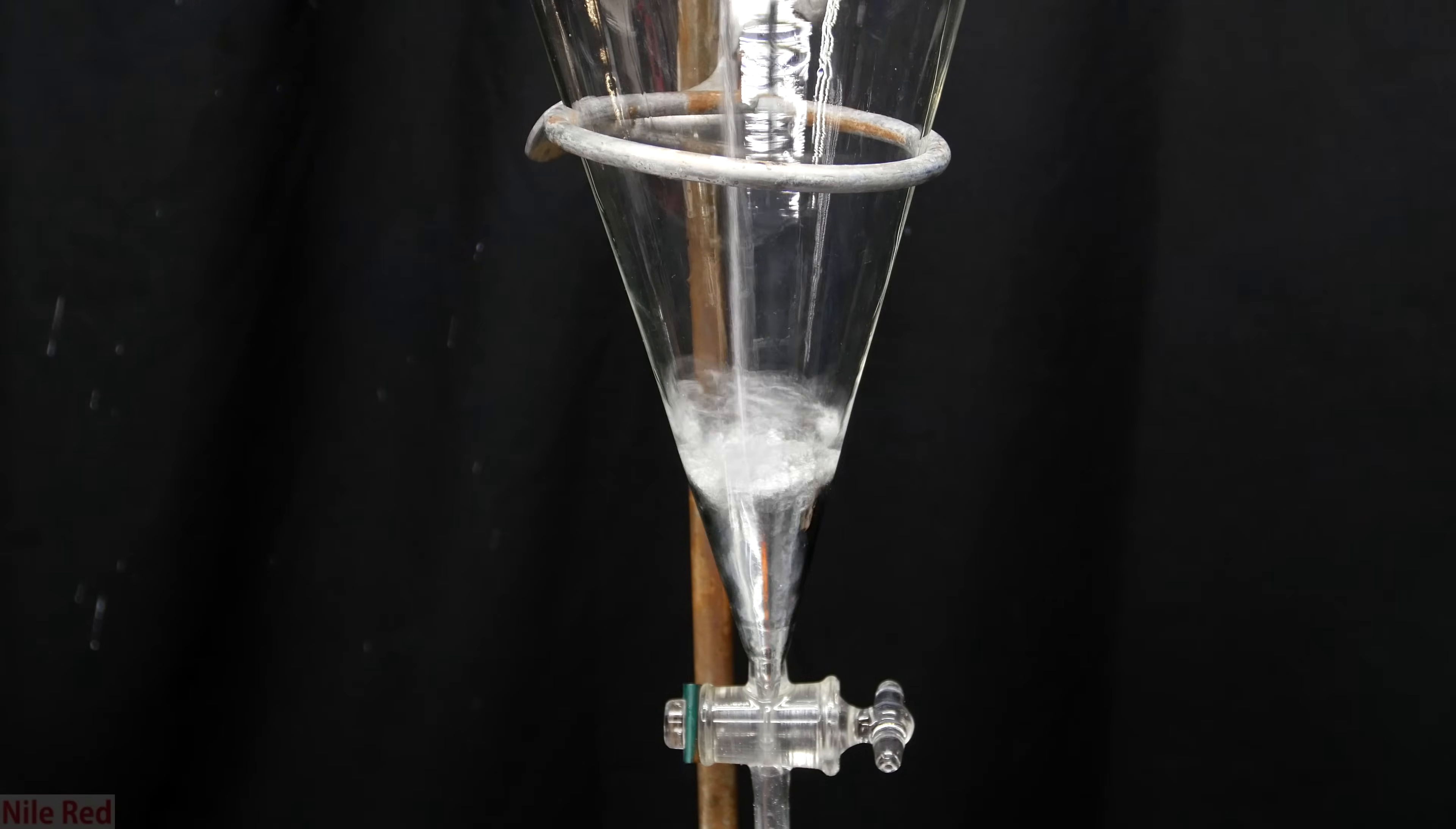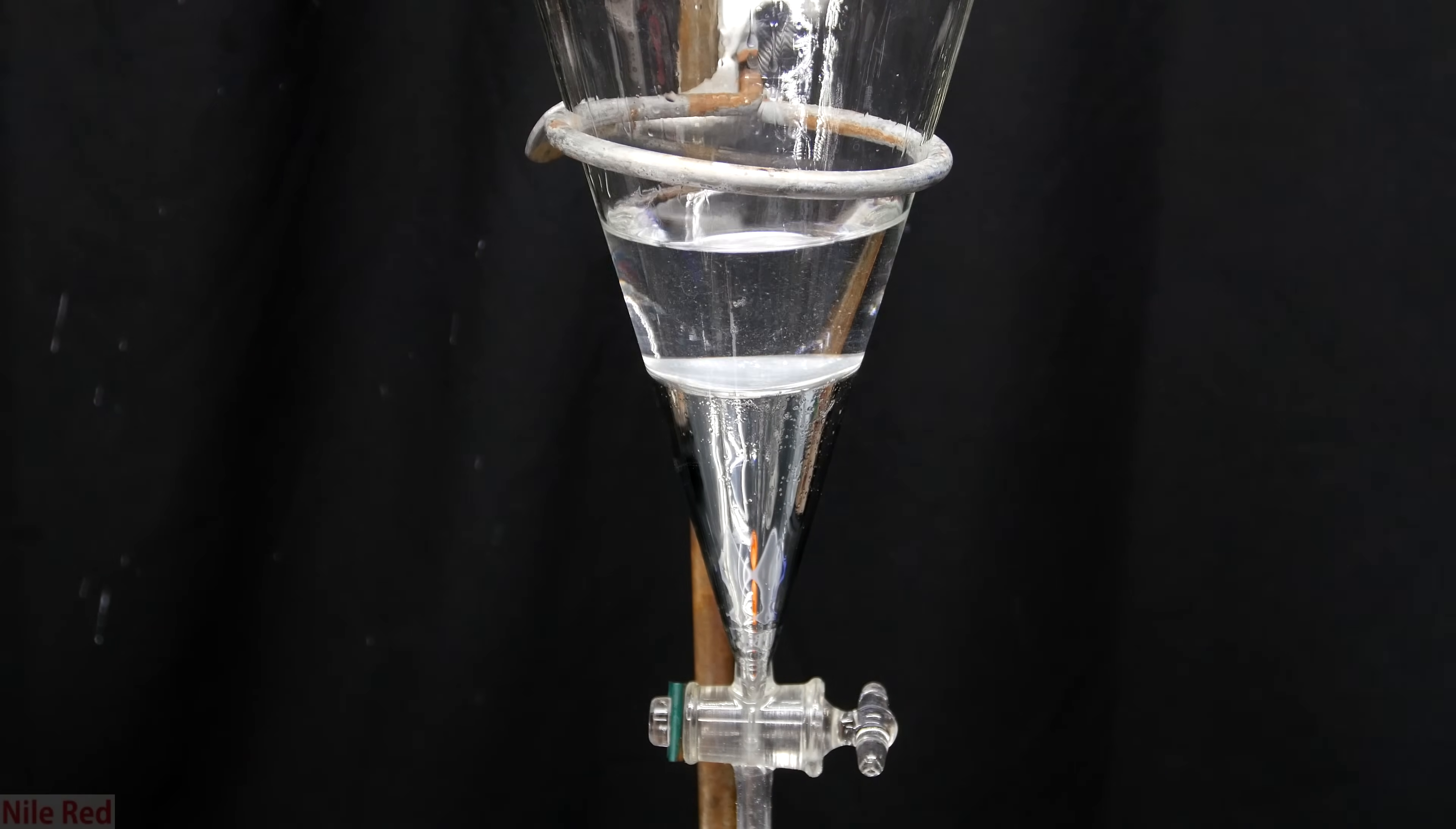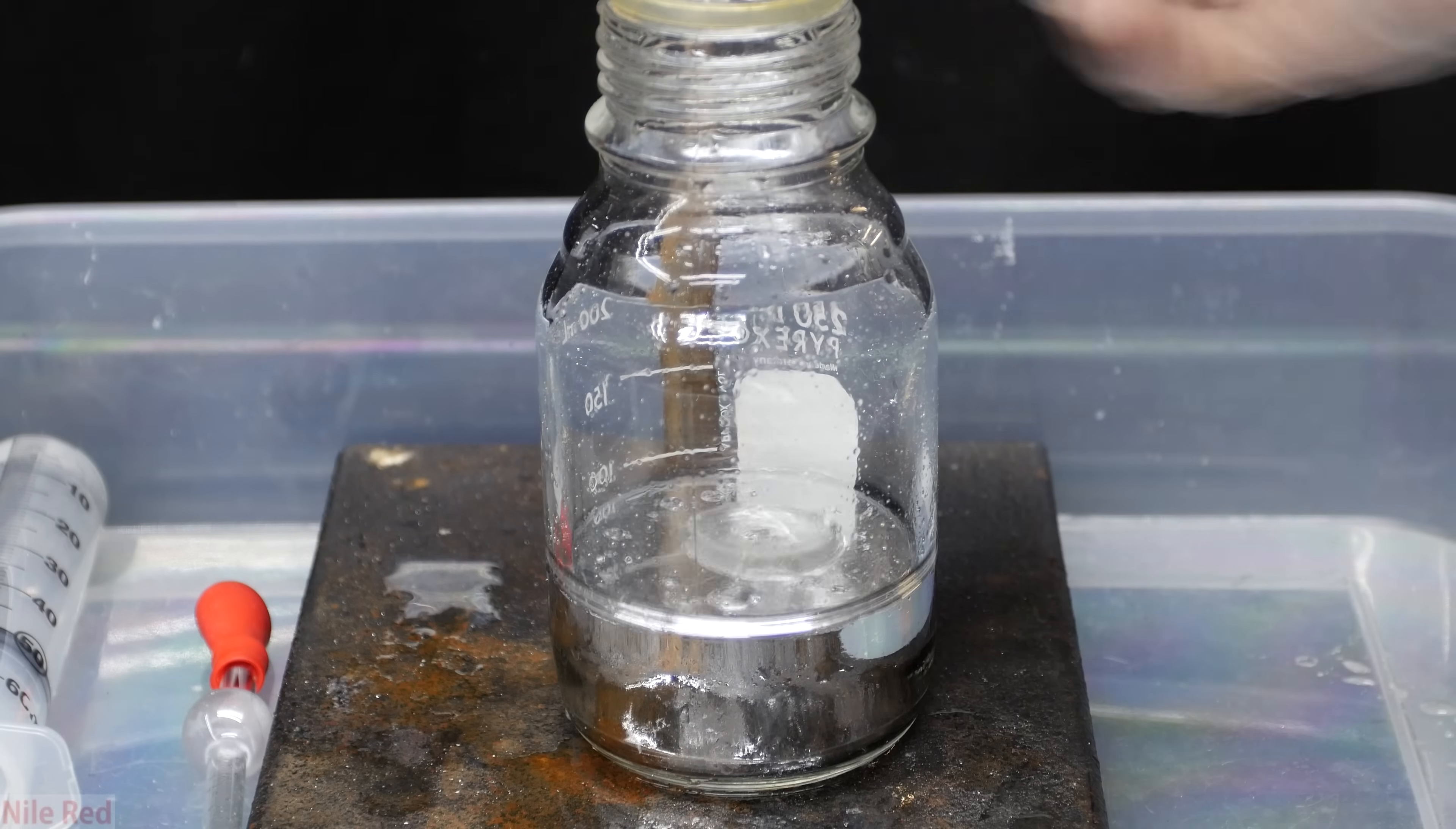To a nice clean separatory funnel, I pour the mercury back in. On top of the mercury, I pour in a few hundred milliliters of distilled water. Then just like with all of the other washings, I cap it, shake it, vent it, and then put it back on the ring stand to separate. The bottom mercury layer is then drained off, excluding as much water as possible.